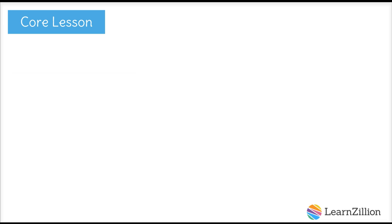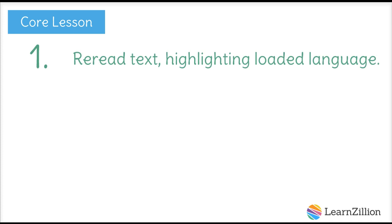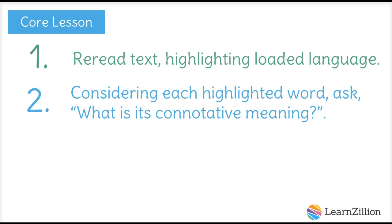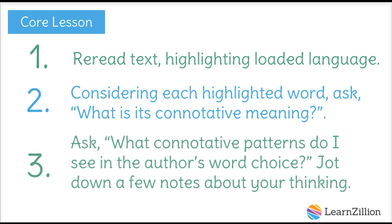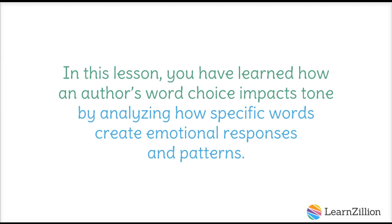Let's review our steps. 1. Reread text highlighting loaded language. 2. Considering each highlighted word, ask: What is its connotative meaning? 3. Ask: What connotative patterns do I see in the author's word choice? Jot down a few notes about your thinking. In this lesson, you have learned how an author's word choice impacts tone by analyzing how specific words create emotional responses and patterns.